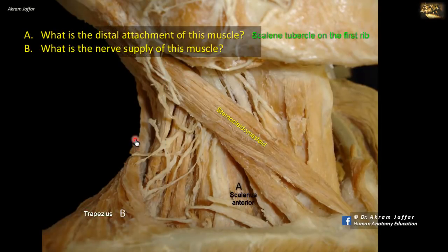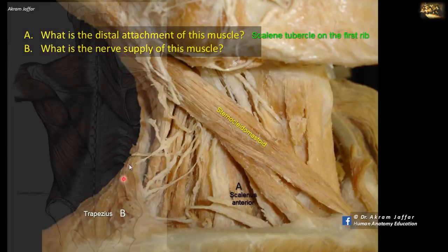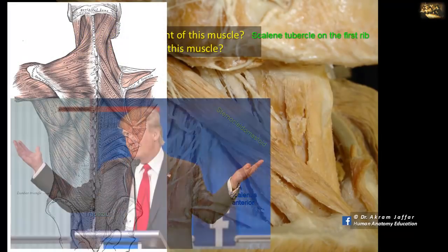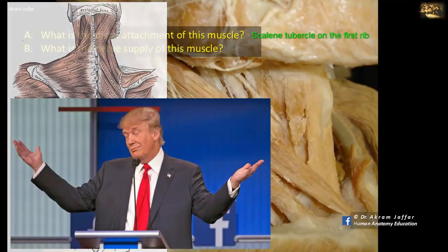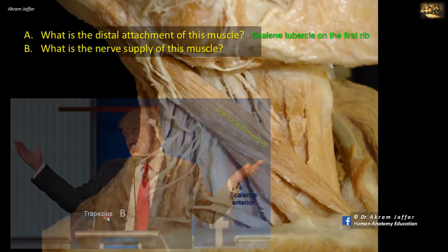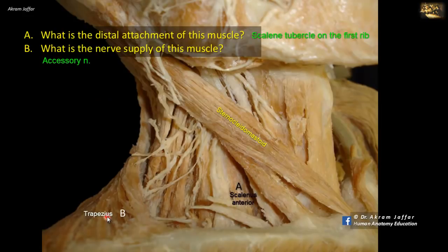Muscle B is the trapezius muscle. Part of the muscle is attached to the clavicle and to the acromion process of the scapula. These are the superior fibers of the trapezius that elevate or shrug the shoulder. The muscle is supplied by the accessory nerve — the spinal root of the accessory nerve — which also supplies the sternocleidomastoid muscle.